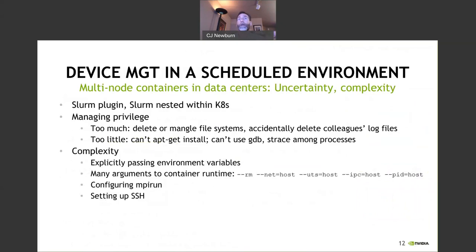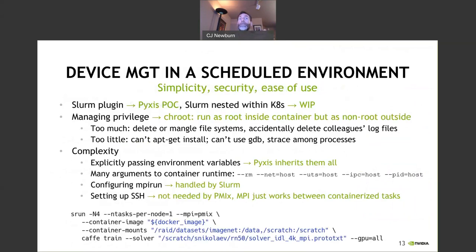Another topic is in the space of Slurm plugins. There can be some difficulties in managing privilege — if you're not careful, you can delete or mangle filesystems, or you can't do apt-get install. There can be a lot of complexity in figuring out all the different arguments to container runtimes and different environment variables. We did a proof of concept to show this with Pyxis: it manages this cleanly, giving you escalated privilege only inside the container but not outside. You set up all of the arguments and variables that you need, keep things simple using PMIx, and there's an example at the bottom.